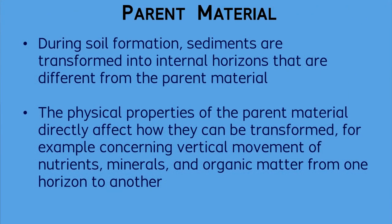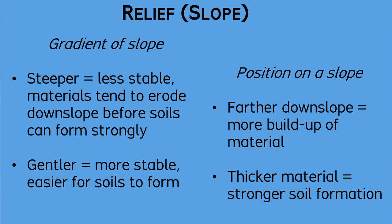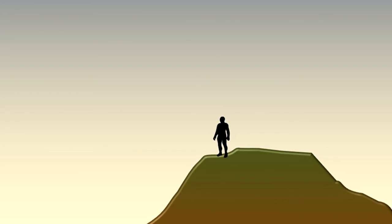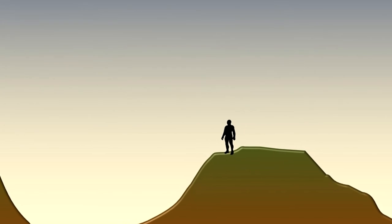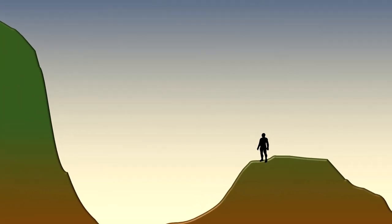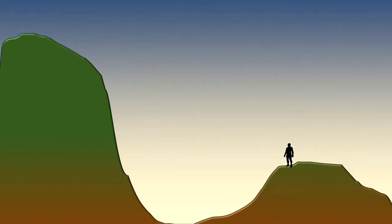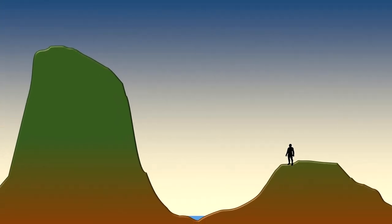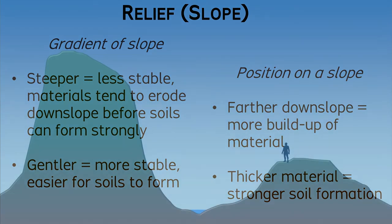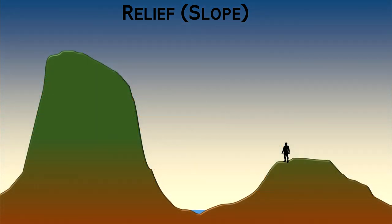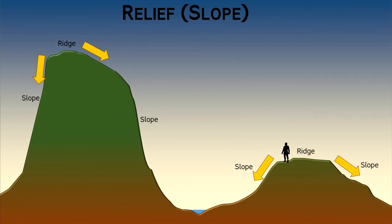Another major factor in soil development is the relief or slope of the terrain. Often, a slope is categorized by its angle or degree. Steep slopes tend to have little soil development due to the erosion of material, while gentler slopes can support stronger soil development. Additionally, you should be aware of differences in the position from the top to bottom of a slope along a landform. Ridge tops potentially could provide stable settings for soil development, but their perimeter edges tend to be easily eroded down the adjacent slopes.